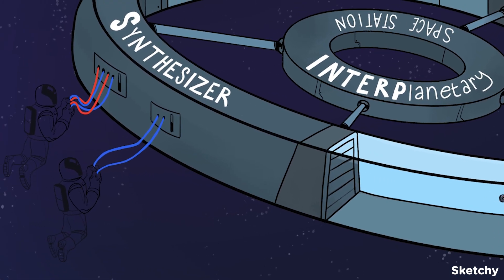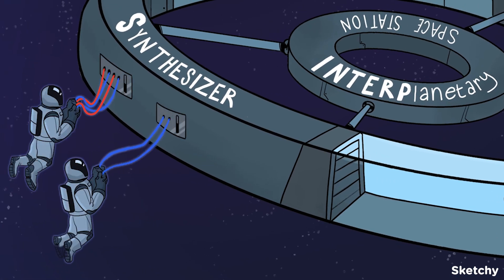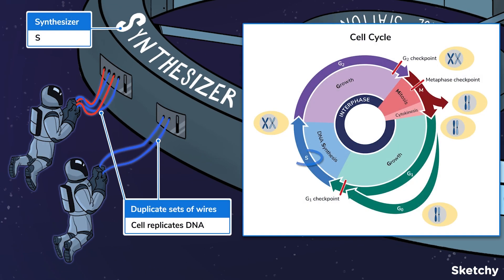Onto the synthesizer room. This is where new information gets synthesized. Okay, we don't actually know what goes down here, but let these duplicate sets of wires remind you that a cell doubles its chromosomes during the S phase.